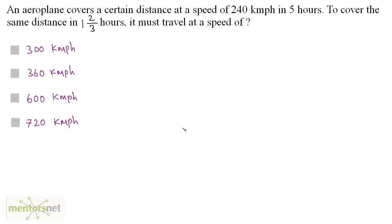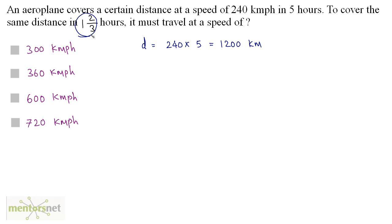An aeroplane covers a certain distance at a speed of 240 km per hour in 5 hours. To cover the same distance in 1 and 2 by 3 hours, it must travel at a speed of? You have the speed and the time it takes to cover the distance, so you can calculate the distance. Distance is equal to speed into time: 240 times 5, which is 1200 km. Now the time to cover the same distance is 1 and 2 by 3, which equals 3 plus 2 by 3, that's 5 by 3 hours.